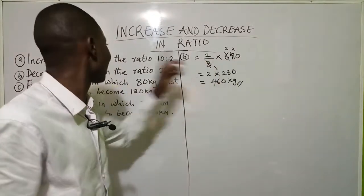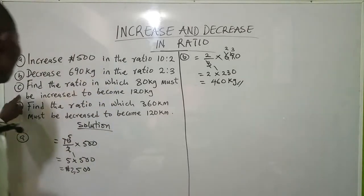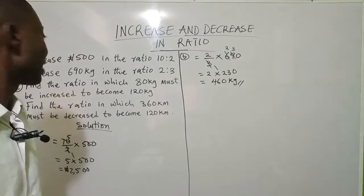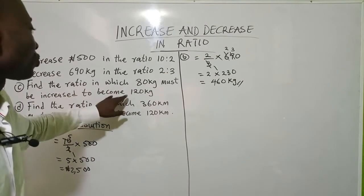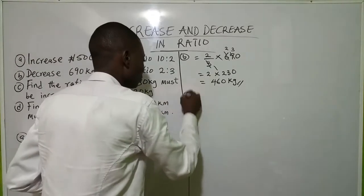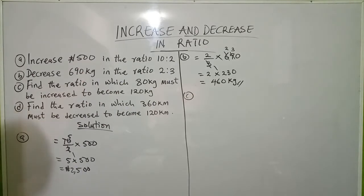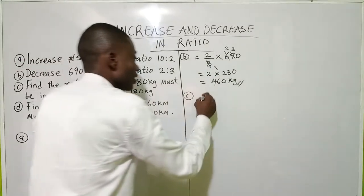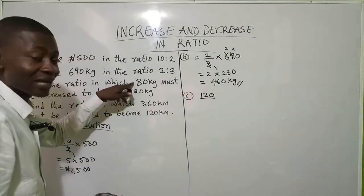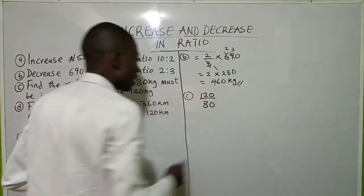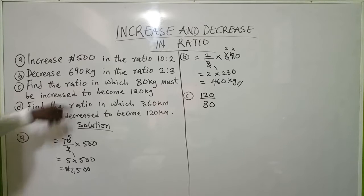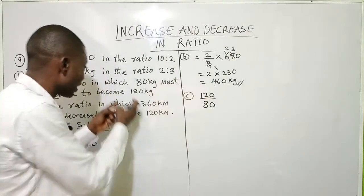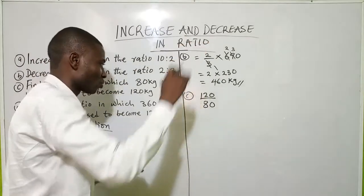And then you multiply it by whatever you are increasing or decreasing. Now part C: find the ratio in which 80 kg must be increased to become 120 kg. Since we are increasing, the bigger value — which is 120 kg — will be in the numerator, and the smaller kg will be in the denominator, because we are increasing. That is exactly what we are doing.